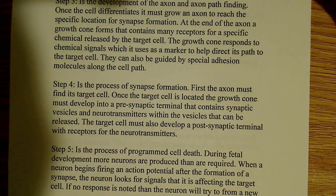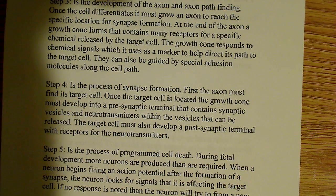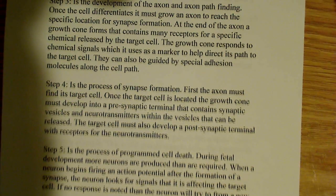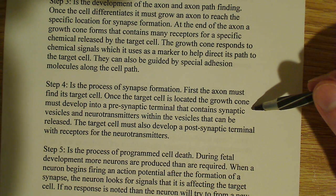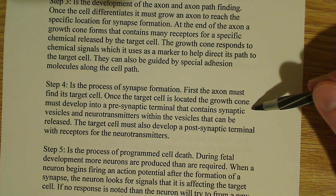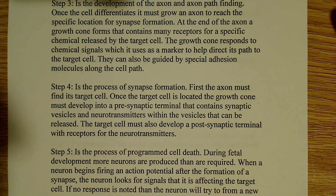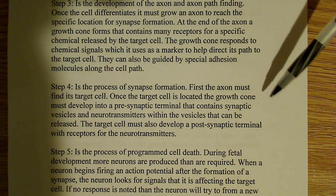Step four is the process of synapse formation. In order to form a proper connection, you need to form a synapse. The axon must first find the target cell, and once located, the growth cone must develop into a presynaptic terminal. That's why the transport of neurotransmitters and other material along the axon is really important. The presynaptic terminal must contain synaptic vesicles, which contain neurotransmitter. You can create an action potential to release the neurotransmitter, causing another cascade, and so on.